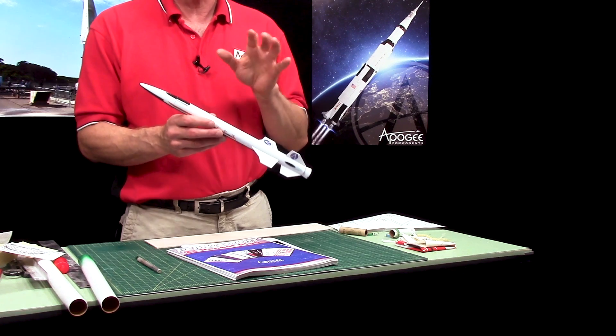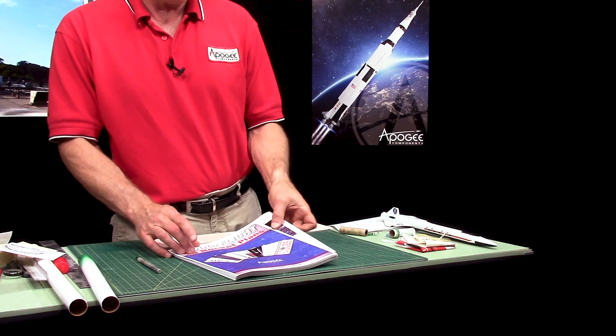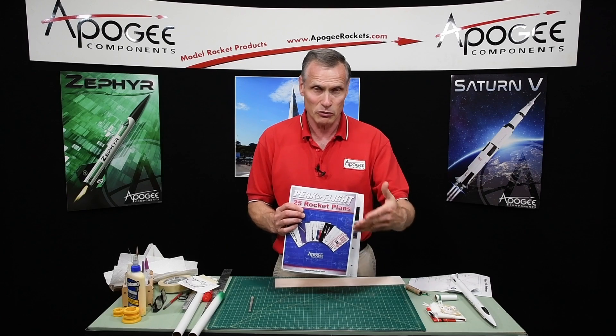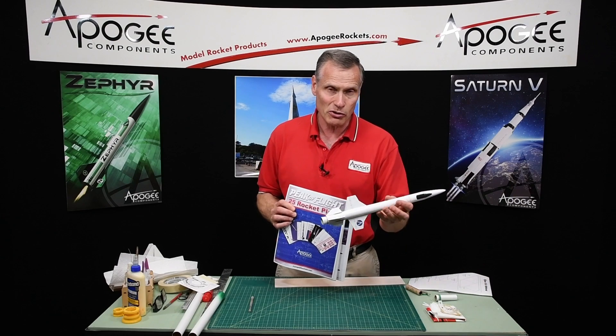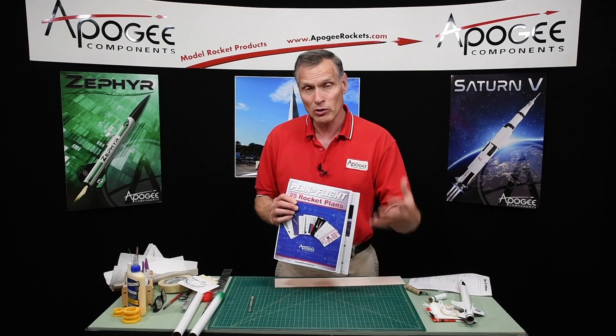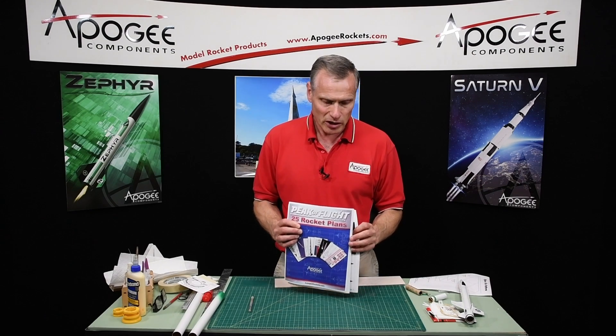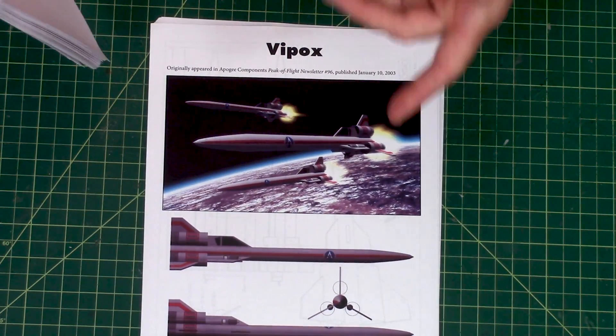Hi I'm Tim Van Milligan from Apogee Components. In this video I want to start building a rocket from plans, which means you're not going to get a kit with all the parts in it. We released a free plan book and you can get this when you subscribe to our free newsletter. There's 25 different plans in here like the Orion, but I want to show you how to build one. The rocket I'm building is called the Vipox and you'll find this on page 77 of the plan book.